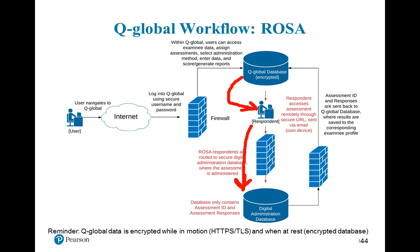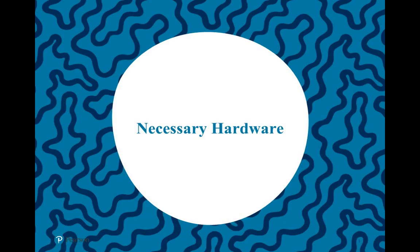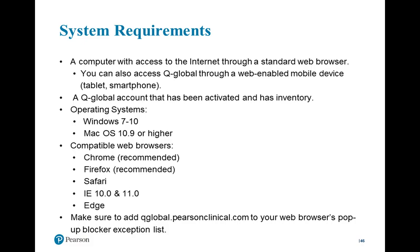In terms of necessary hardware, the short answer is a computer with access to the Internet — a web-enabled device like a desktop, laptop, or even a tablet. You would also need a Q-Global account that has been activated and has inventory, and an operating system: Windows 7 through 10, or Mac OS 10.9 or higher. Q-Global is compatible with all major web browsers; I recommend using either Google Chrome or Mozilla Firefox. Also make sure to add Q-Global.pearsonclinical.com as an exception to your web browser's pop-up blocker.